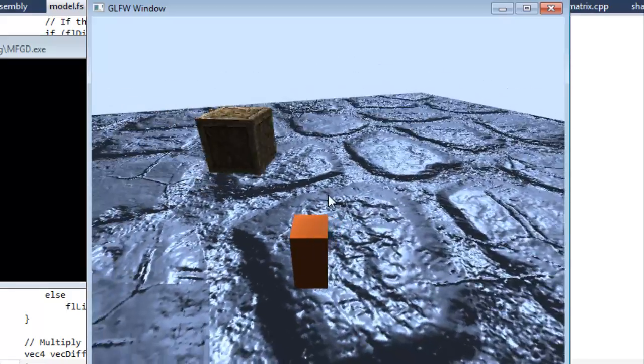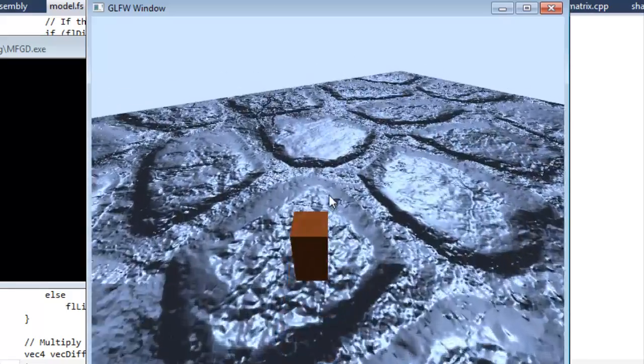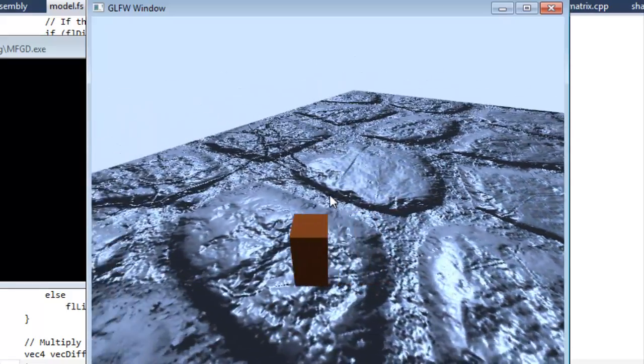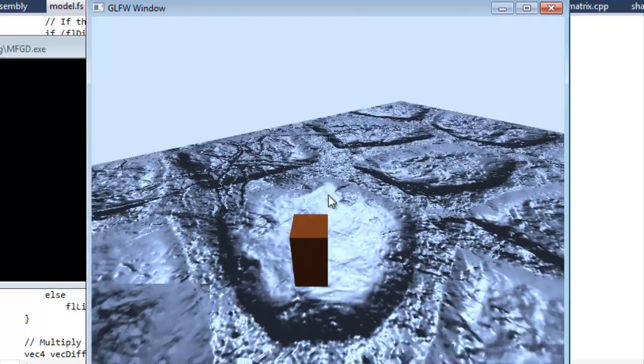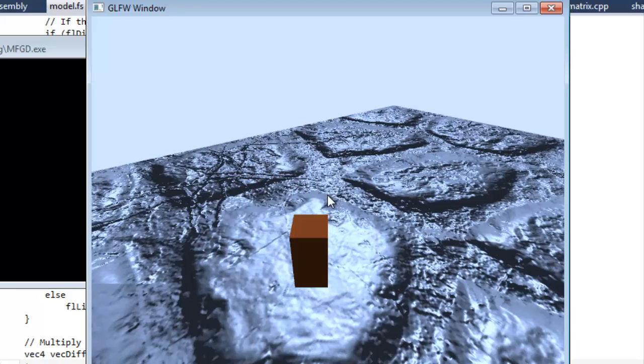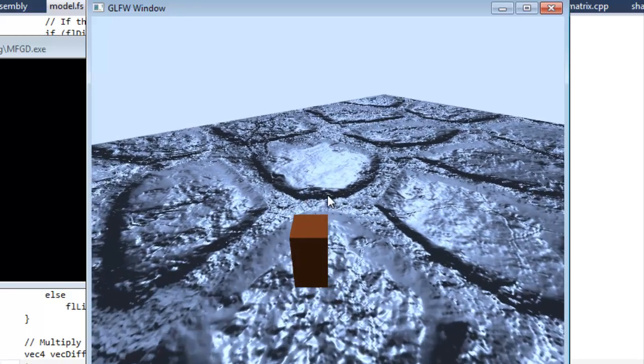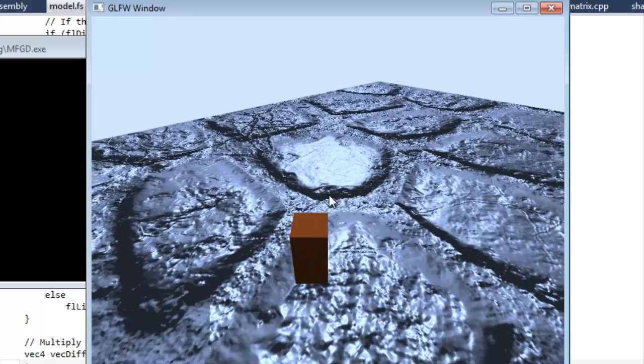Here we go. Okay. So the specular term is the bright sunlight that you can see on these stones. When I move, look at, keep your eye on the stone that I'm standing on right now as I back off of it. See how it's very shining and bright.